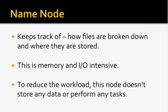Because the name node maintains metadata for a cluster that could be petabytes in size, this is very highly IO-intensive work, requiring a lot of RAM and processing power. To reduce the workload on the name node, it does not store any actual data or perform any low-level tasks. It only stores the metadata of the whole cluster, and redirects client requests to appropriate data nodes to perform the low-level IO tasks.